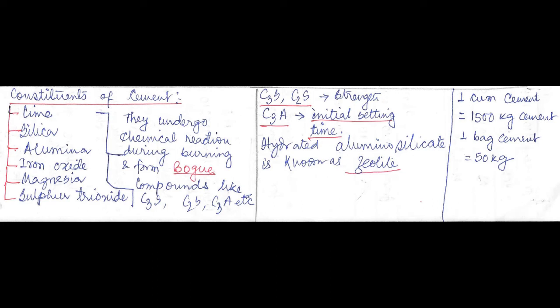Hydrated aluminosilicate is also known as zeolite. So please put a star mark over here. And just for your information, one cubic meter of cement equals 1500 kg of cement, and one bag of cement is approximately 50 kg.